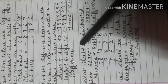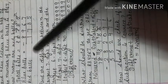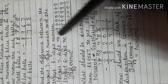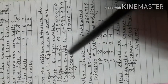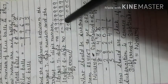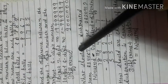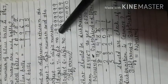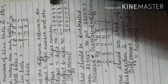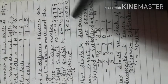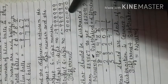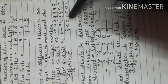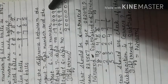The largest 7-digit number is 9,999,999 (seven nines) and the largest 6-digit number is 9,99,999 (six nines). Now subtract the largest 6-digit number from the largest 7-digit number, starting from the ones place. 9 minus 9 is 0 — as you have learned in subtraction facts, subtracting any number from itself always gives 0.